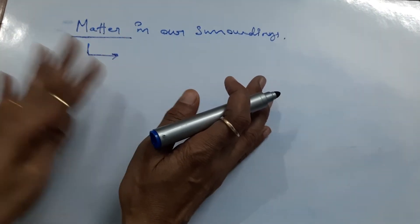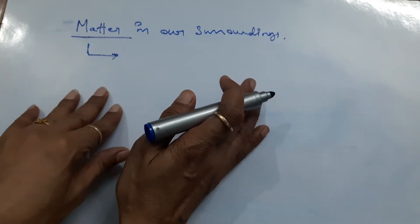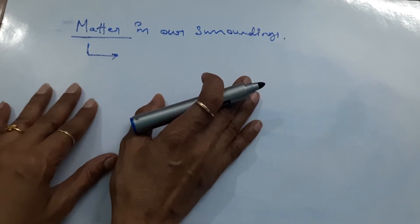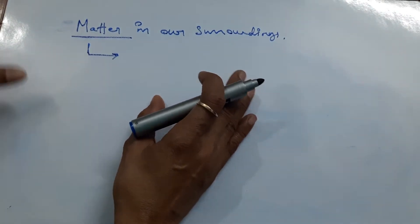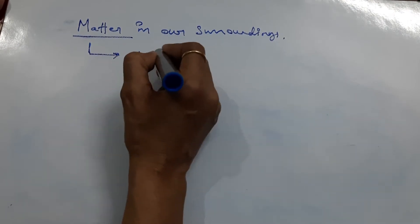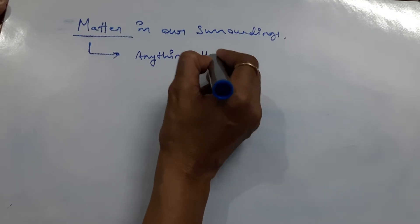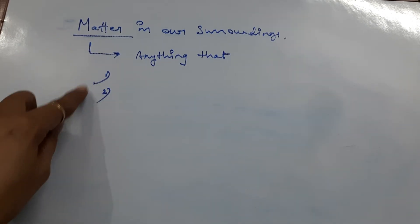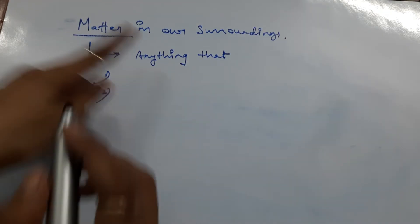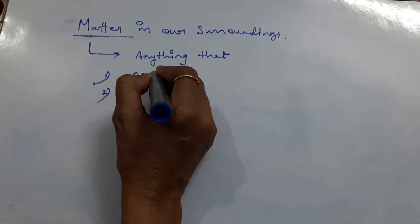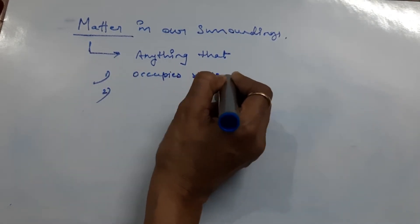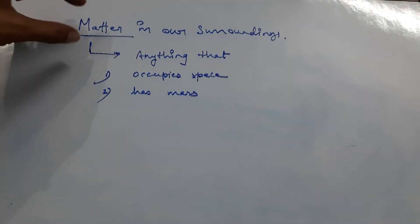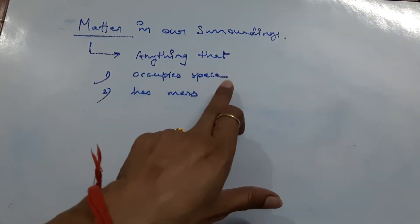So just leaving abstract things, whatever substances or objects are there in the universe, every object is made up of matter. Matter has two conditions: anything that occupies space, and that has mass.